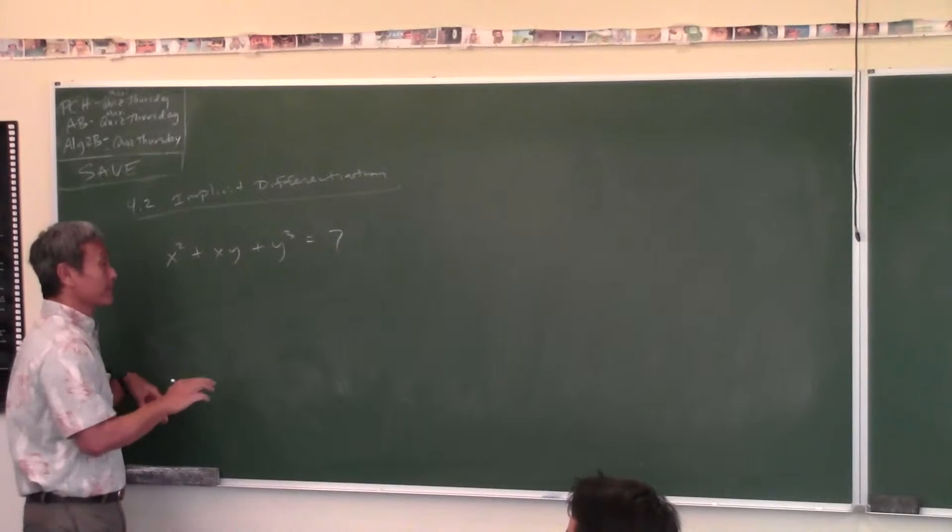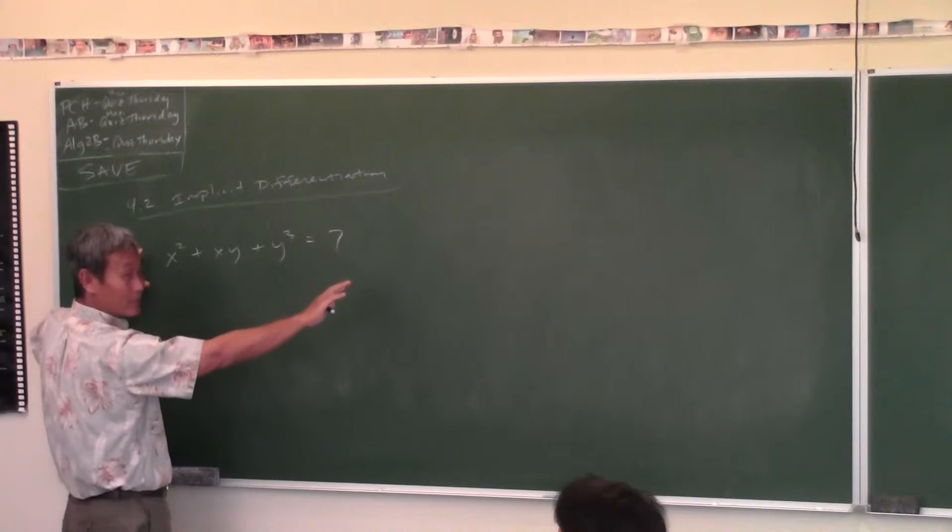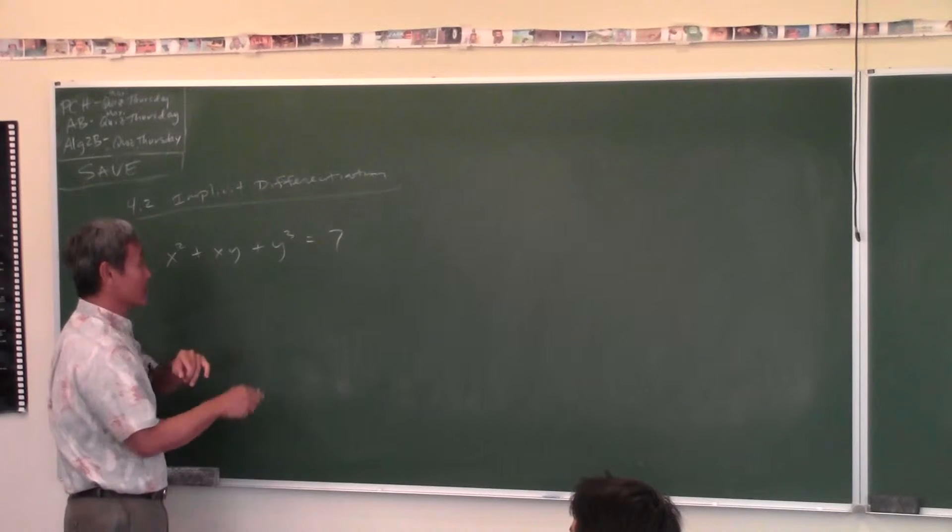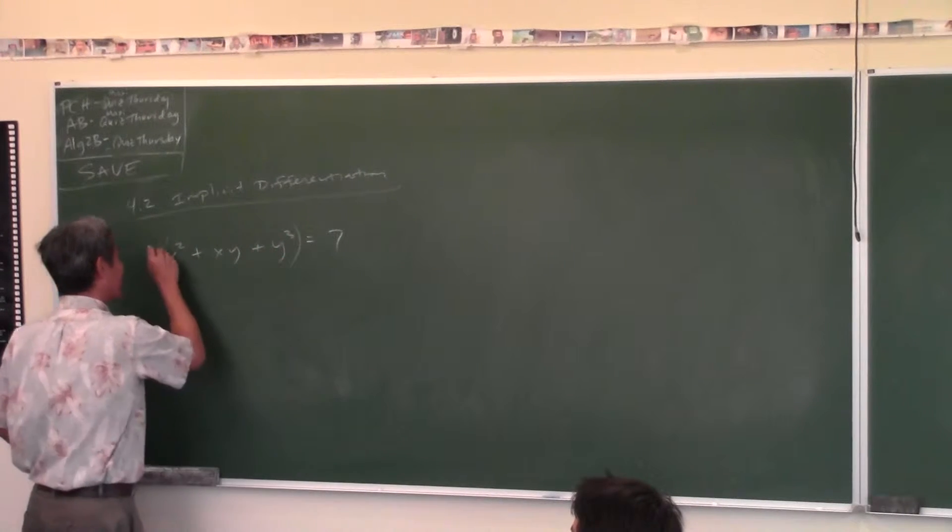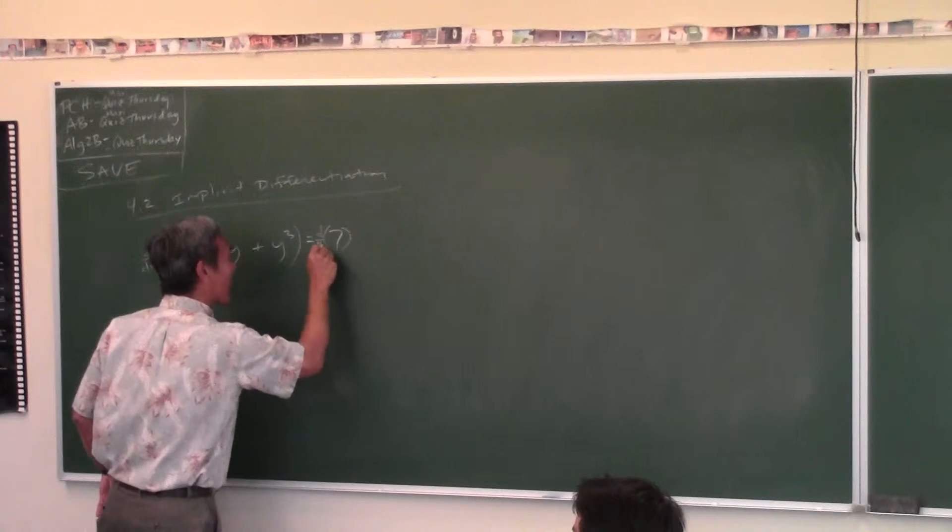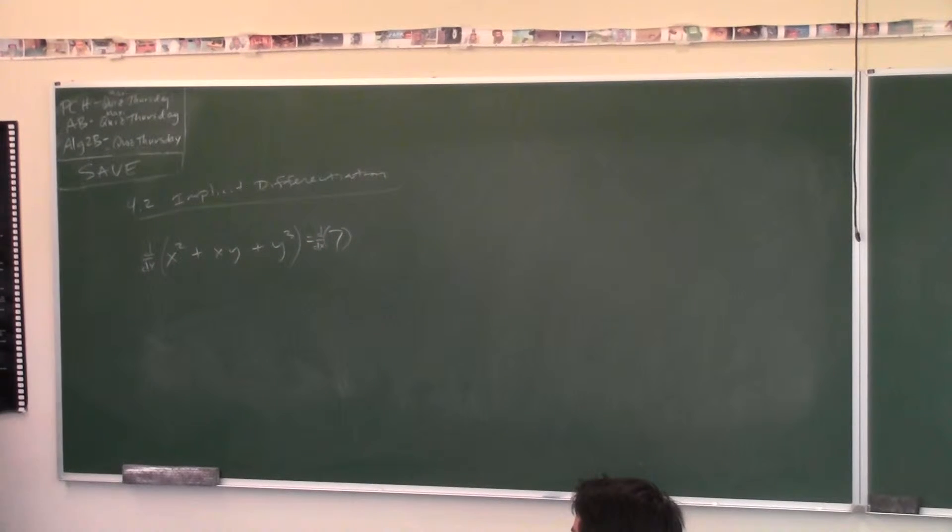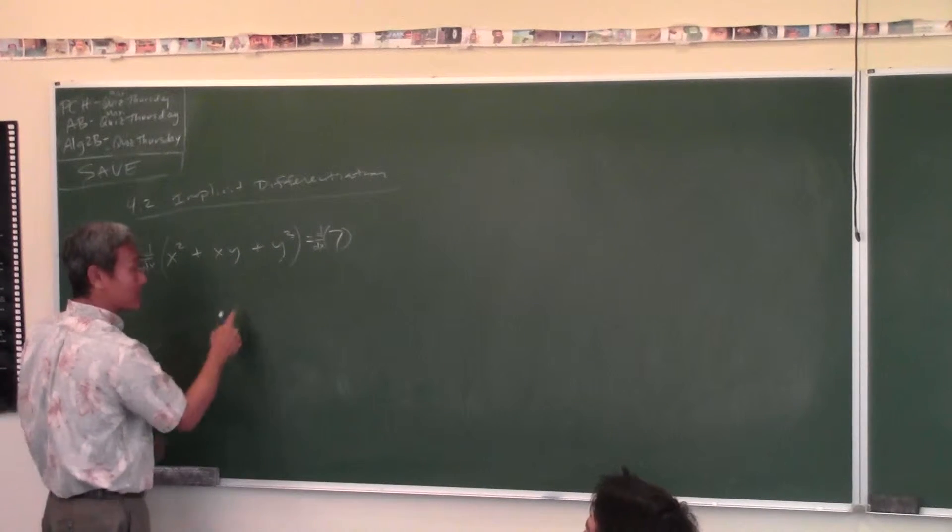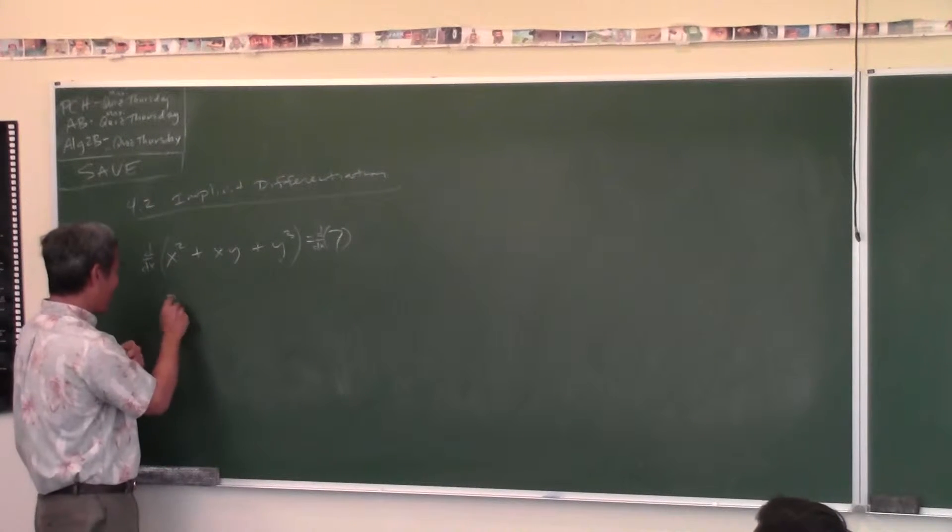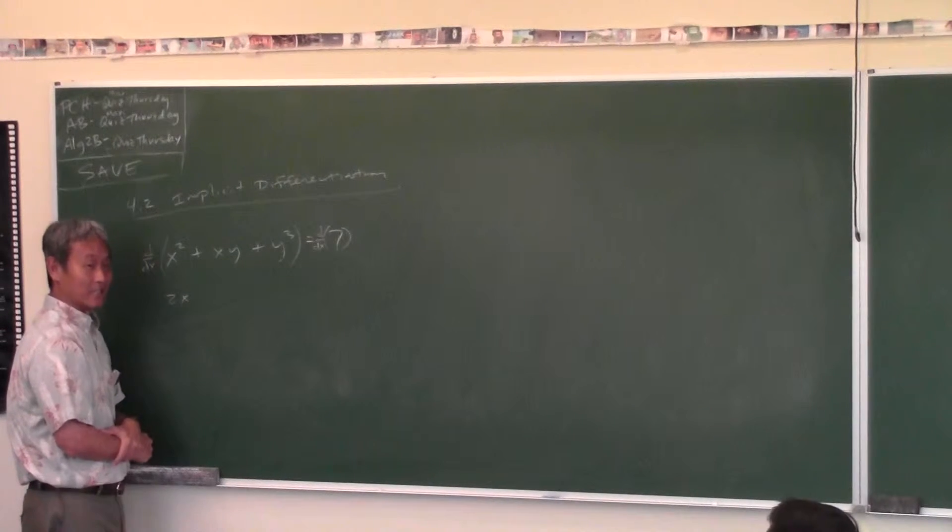So what we're going to do is we're going to take the derivative of both sides of this equation with respect to x. So this is what we're actually doing. We're taking the derivative of both sides with respect to x. In other words, we're not going to solve for y. We're just going to take the derivative. Go term by term. Now, when you have terms like this, you just take the derivative one term at a time. Okay, I'll do the first one. 2x. That's easy enough, right?